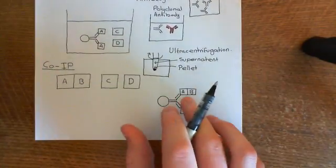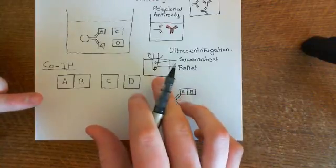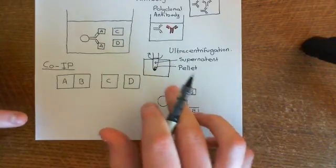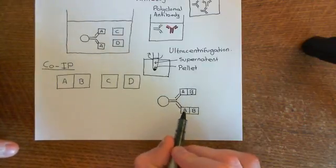Now, what you will then do is analyse what's in the pellet, and you will find that both protein A and protein B are within the pellet, and what that shows is that protein B must bind to protein A.